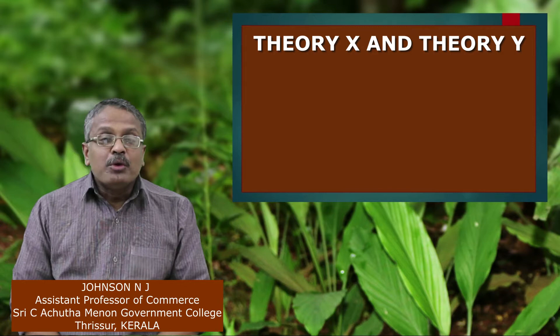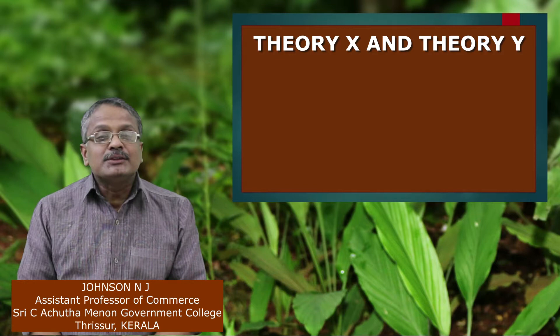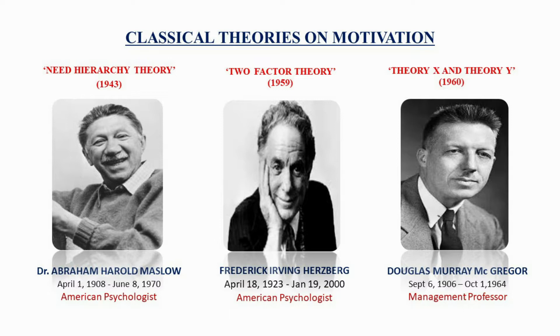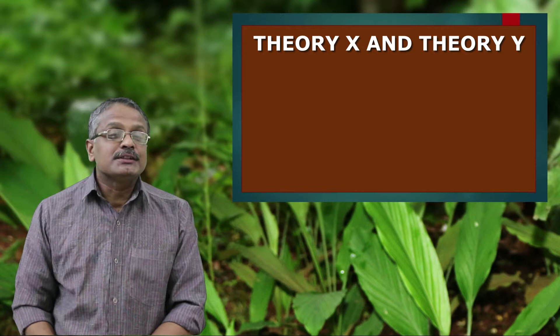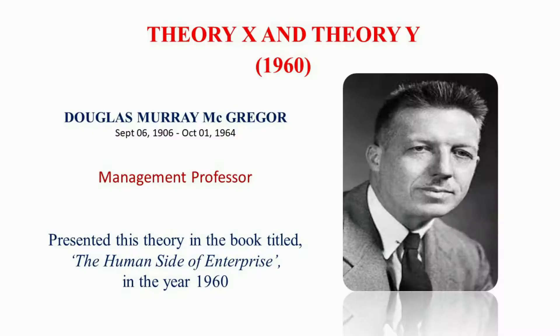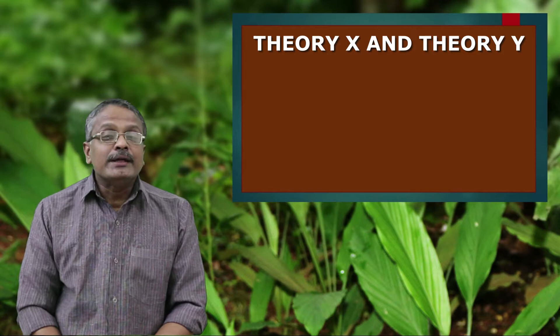Hello friends, welcome again to the class on motivation theory. Today we discuss one of the classical theories on motivation: Theory X and Theory Y. We know that Maslow's need hierarchy theory, Herzberg's two-factor theory, and McGregor's Theory X and Theory Y are known as classical theories on motivation. We have already discussed the first two theories in the previous classes. In this class we discuss Theory X and Theory Y. Douglas Murray McGregor formulated Theory X and Theory Y. He presented this theory in his book titled 'The Human Side of Enterprise' in the year 1960.